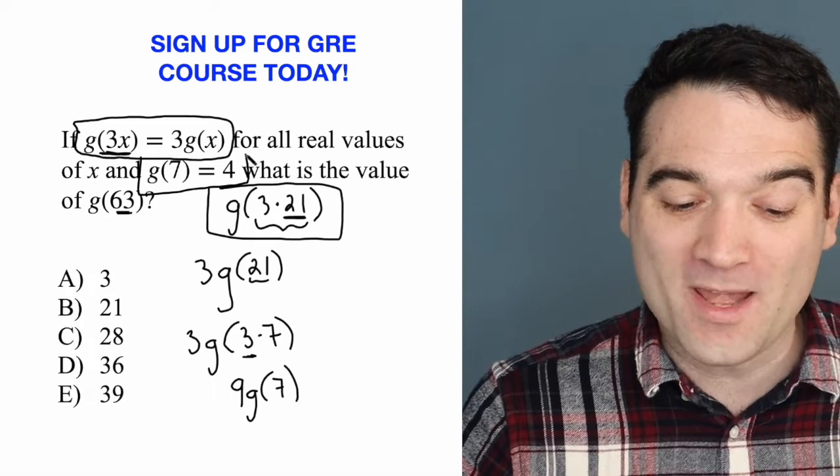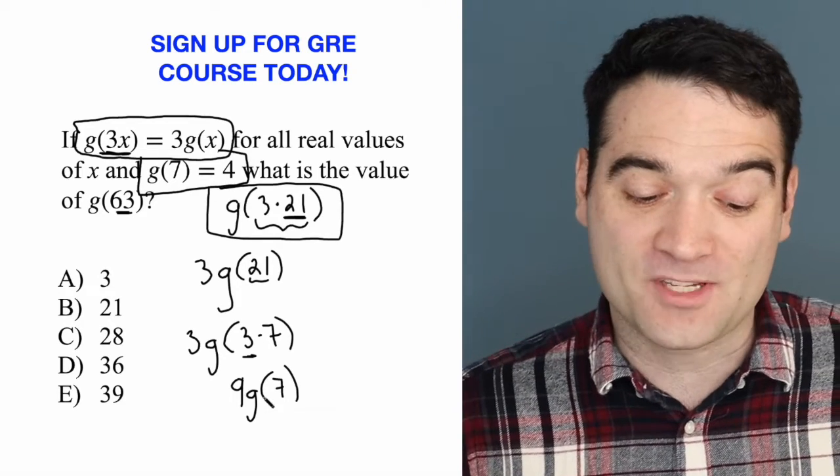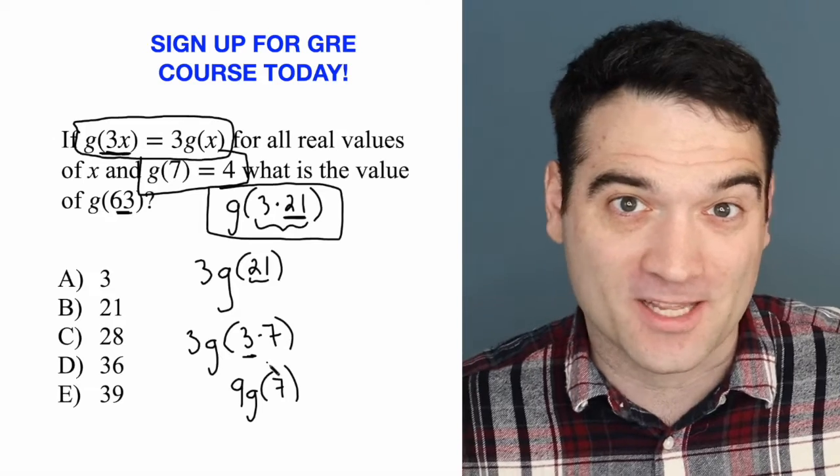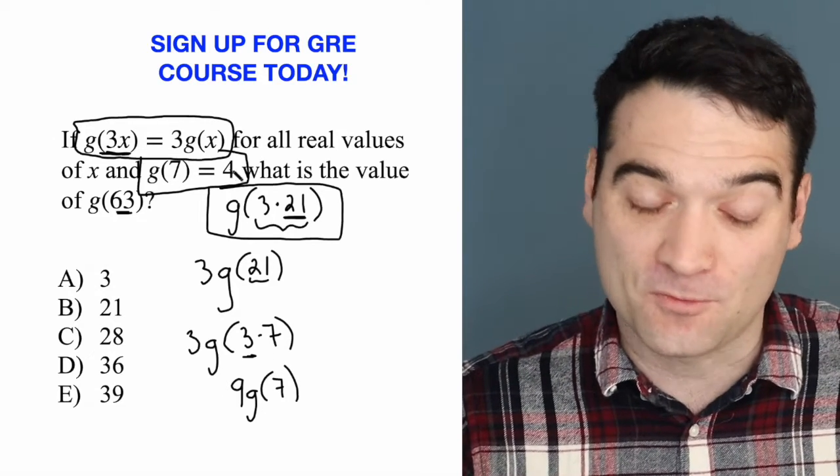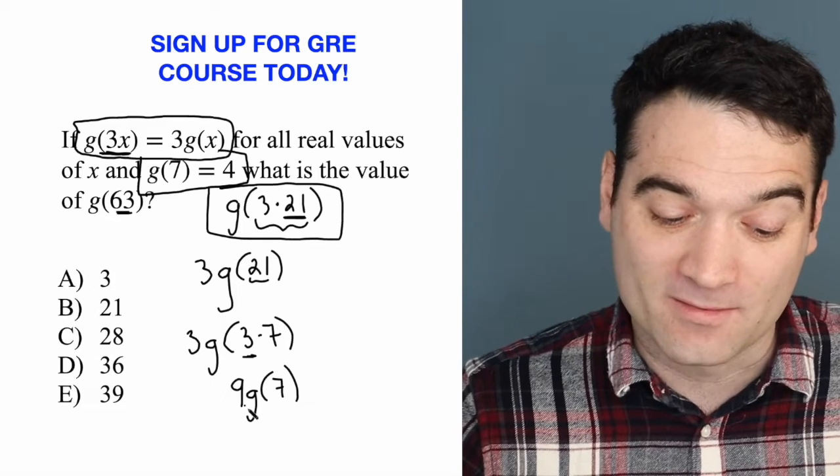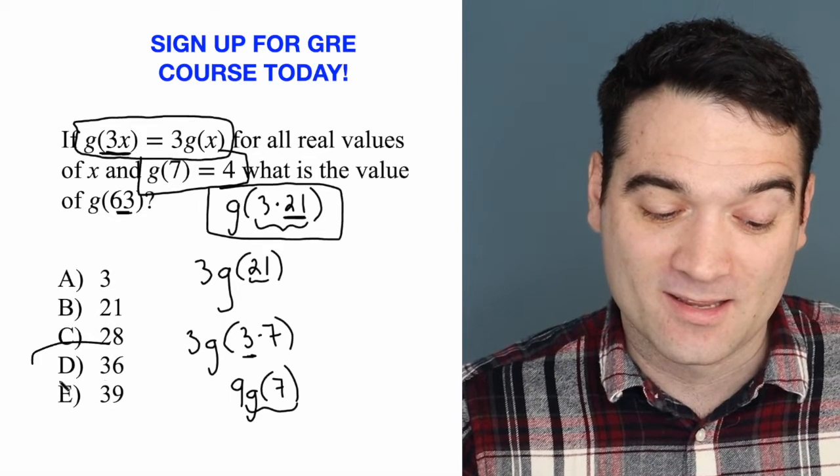And now we get to this part. What is g of 7? Well, g of 7 is 4. I don't know what the actual function looks like, but I don't need to. Because I know that g of 7 is equal to 4. And 9 times 4, 9 times g of 7, is 36.